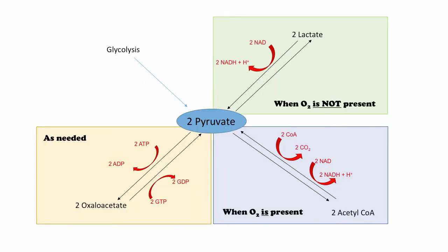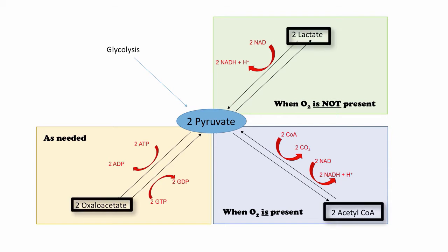Before we start with the cycle, we should talk about where the starting molecules come from. As we have briefly covered before, the product of glycolysis, pyruvate, has three options to take and the presence of oxygen in the cell will tell us where it will go.